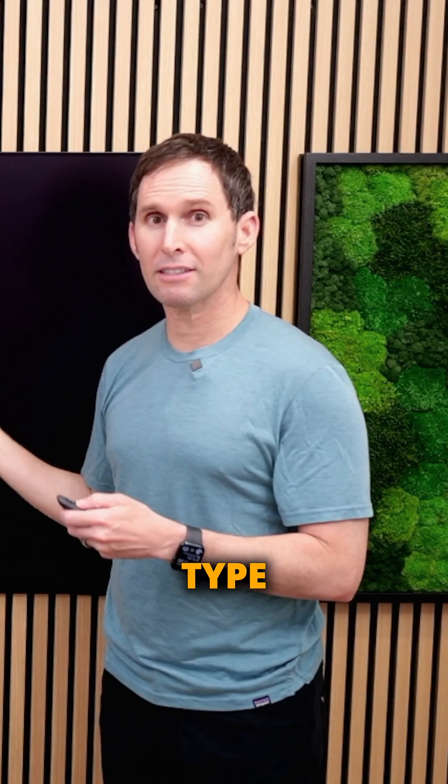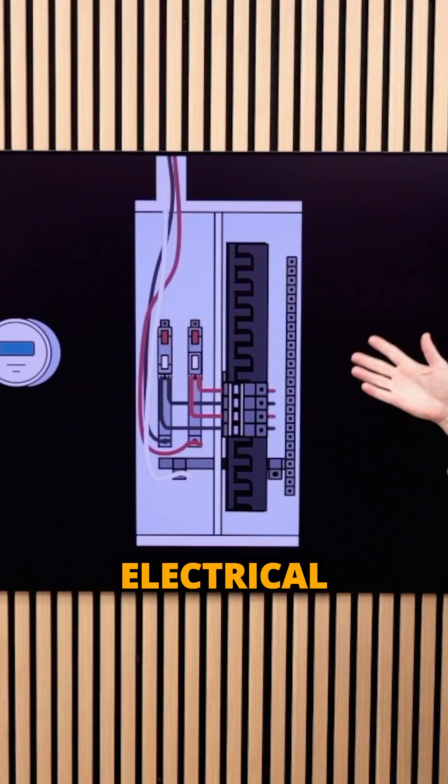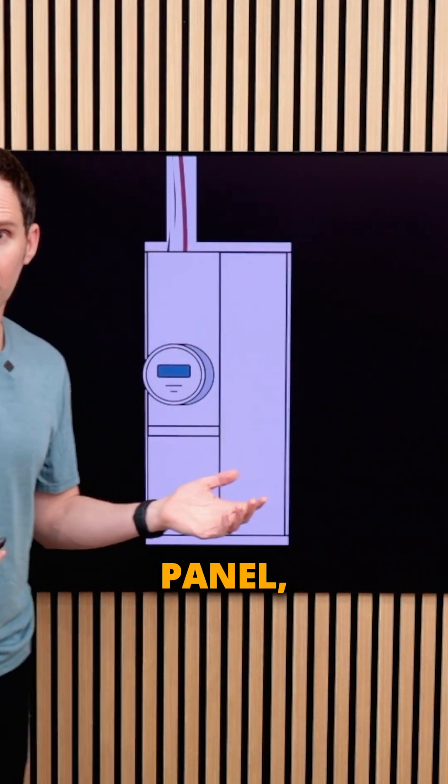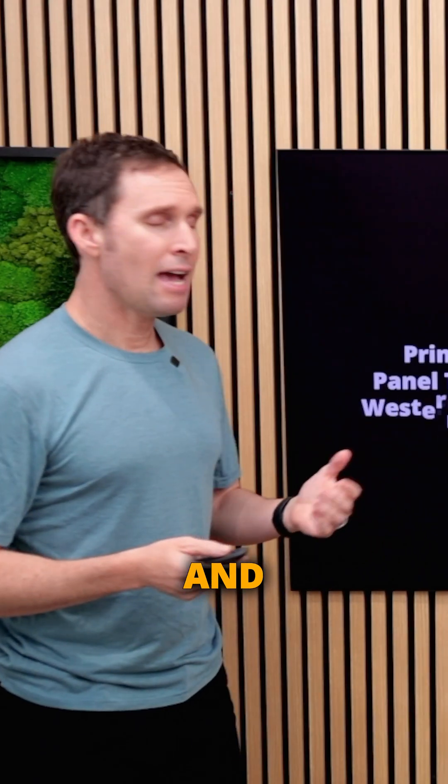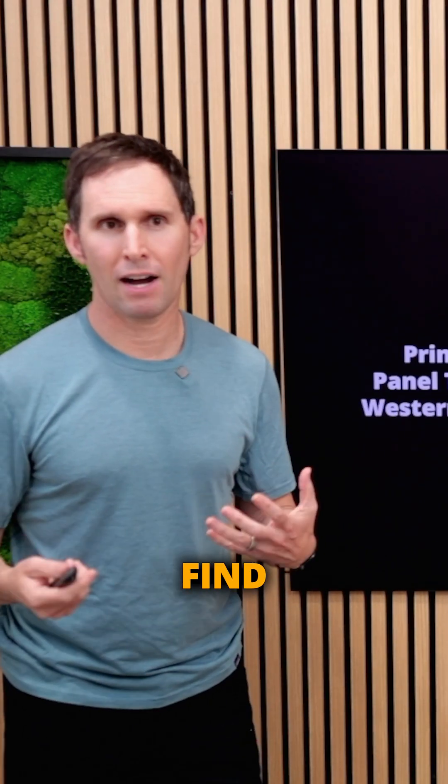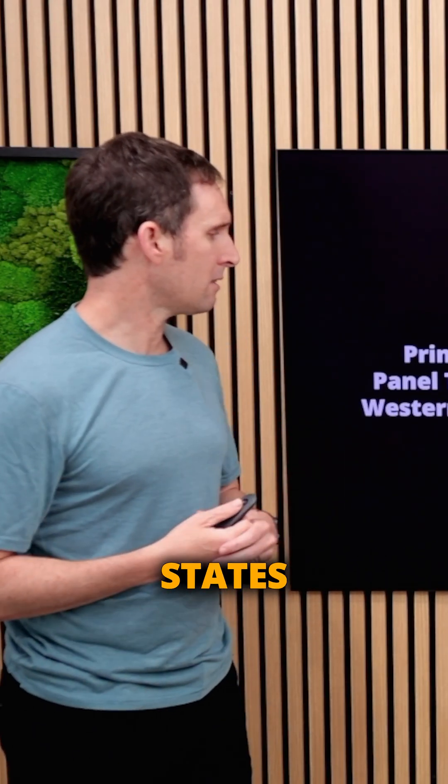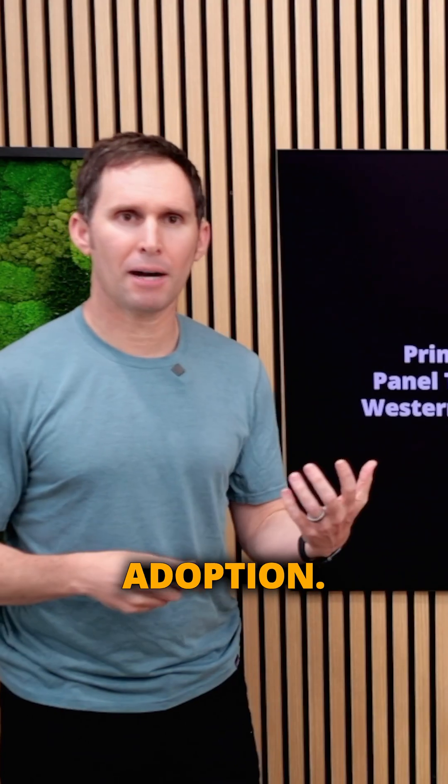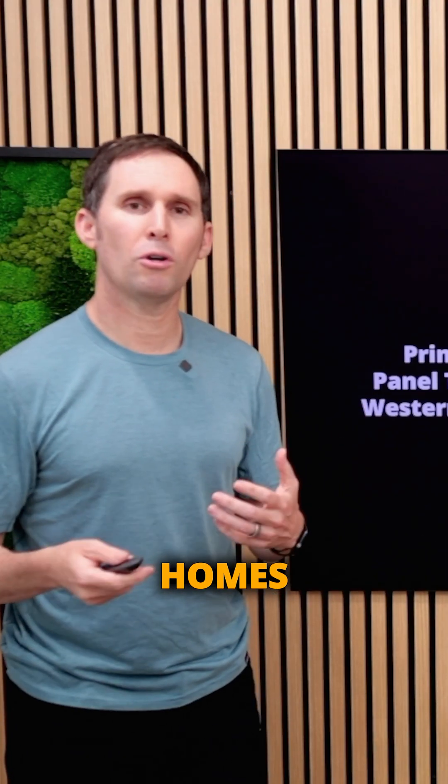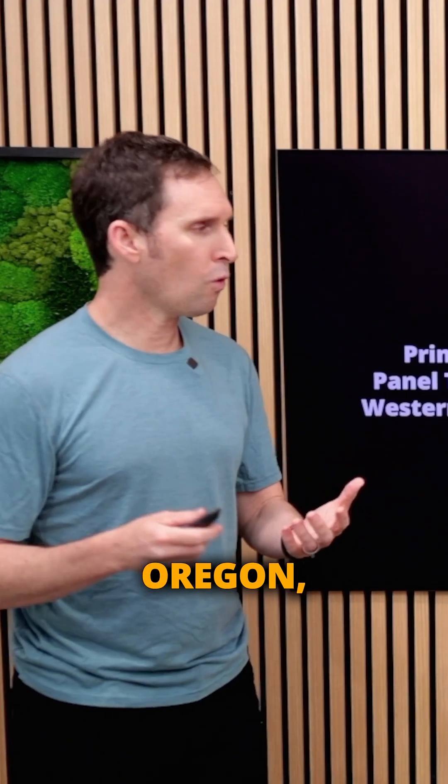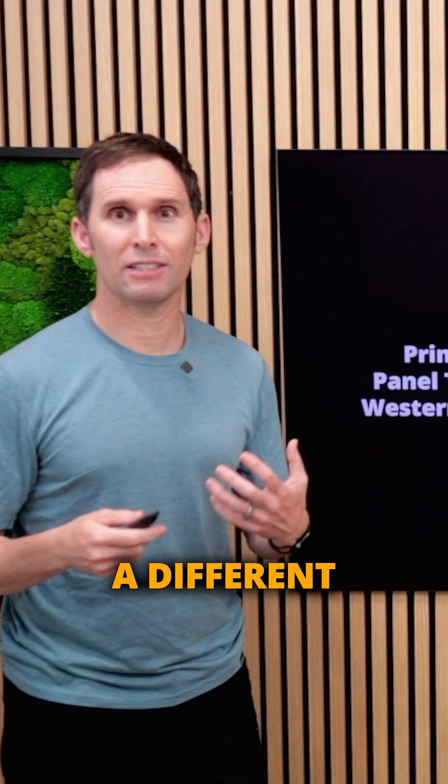This specific type of main electrical panel is called a combination panel, and it's very common - the primary type you'll find in the western United States. Because of code and code adoption, this panel was primarily installed in most homes in California, Arizona, and Oregon, while on the East coast they have a different type of panel.